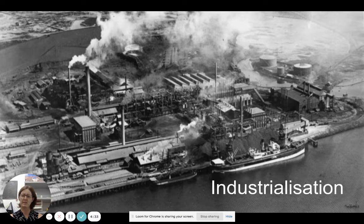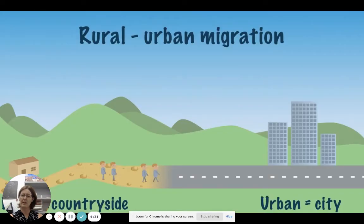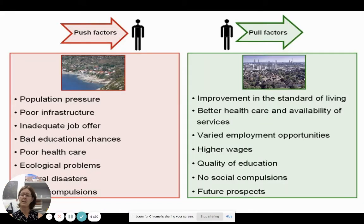We can go back to industrialization — different countries are at different stages. Then we generally get rural-to-urban migration. This will contribute to urban growth and is one of the components, because we've got two components of urbanization here. You can see the push and pull factors when we're looking at rural-to-urban migration.